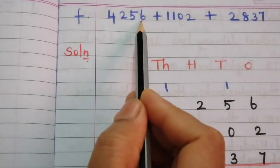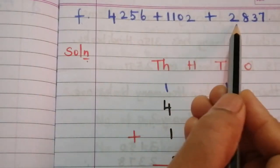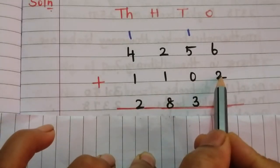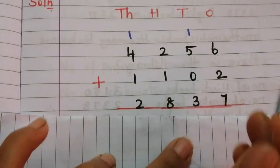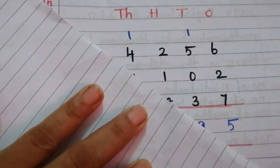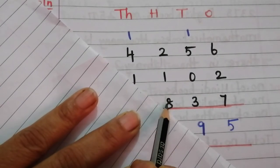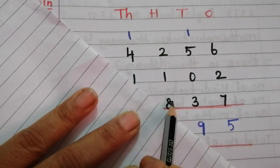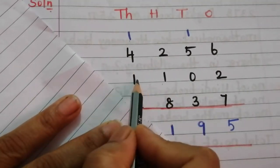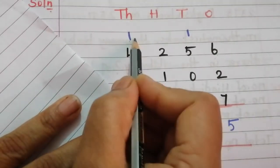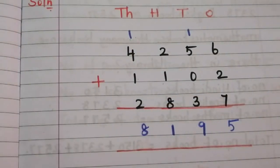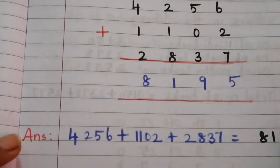Problem F: 4,256 plus 1,102 plus 2,837. Ones: 7 plus 2 is 9, 9 plus 6 is 15 — put 5, carry 1. Tens: 3 plus 5 is 8, 8 plus 1 is 9. Hundreds: 8 plus 2 is 10, 10 plus 1 is 11 — put 1, carry 1. Thousands: 2 plus 1 is 3, 3 plus 4 is 7, 7 plus 1 is 8. The answer is 8,195.